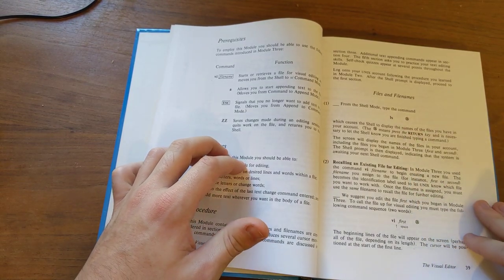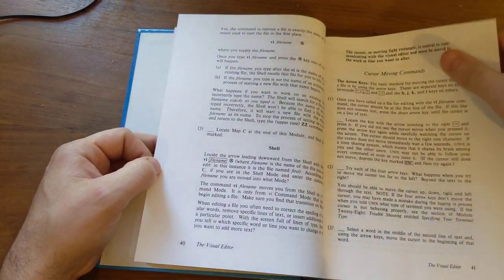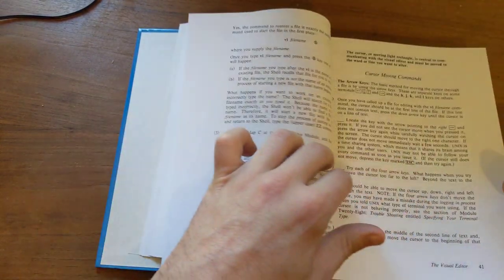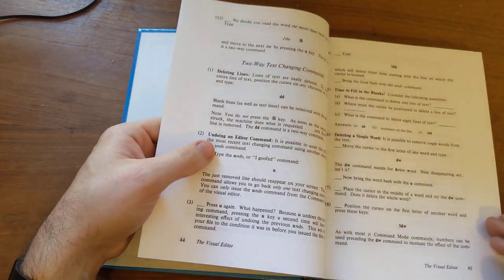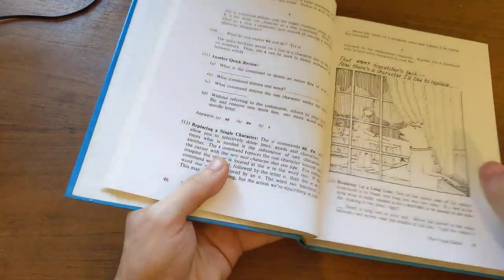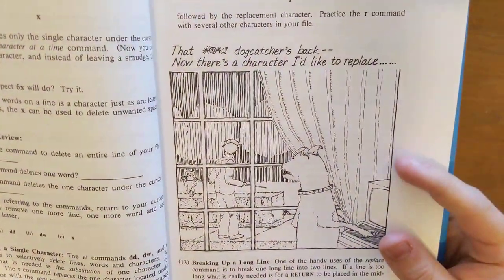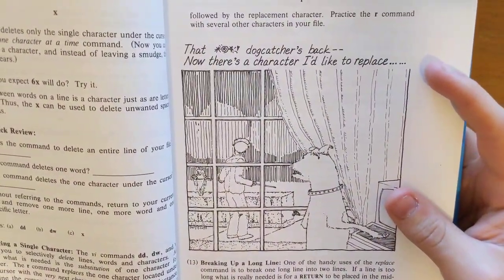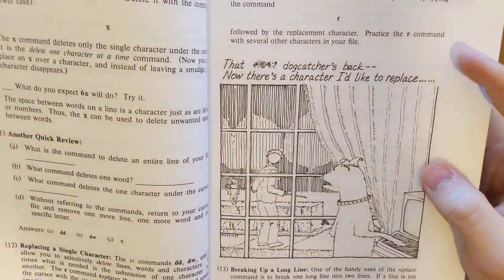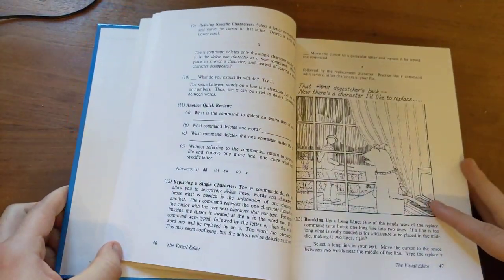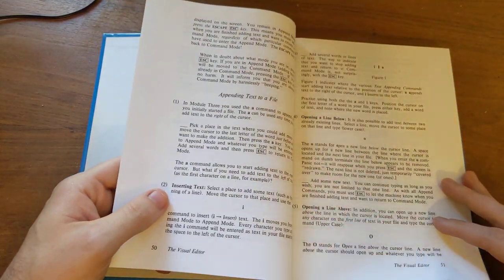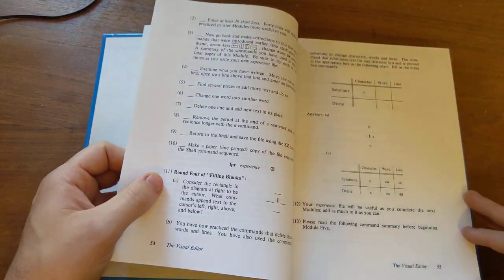So basic stuff, you know, LS to show files and, you know, they go through some other things on the shell. Let's see. I think they have, yeah, like, HJKL moving around in Vim. Pretty quickly, oh, yeah, they tell you more Vim commands, so here's, you know, that dog catcher's back. Now, there's a character I'd like to replace, because he's talking, he's pressing R, get it, you know, replace a character in Vim. Wow. Wow, guys, upvote this if you know what that's about. That's, that's hilarious.